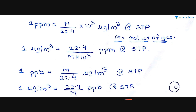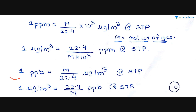The full set of conversions at STP: 1 ppm = M/(22.4 × 10³) µg/m³; 1 µg/m³ = 22.4/(M × 10³) ppm; 1 ppb = M/22.4 µg/m³; 1 µg/m³ = 22.4/M ppb. These conversions are very important and many questions in the GATE exam are based on converting between units.